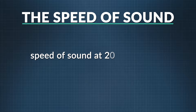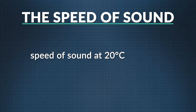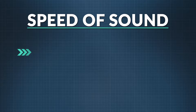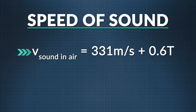The equation is: the speed of sound in air equals 331 meters per second plus 0.6 times the temperature of the air in Celsius.